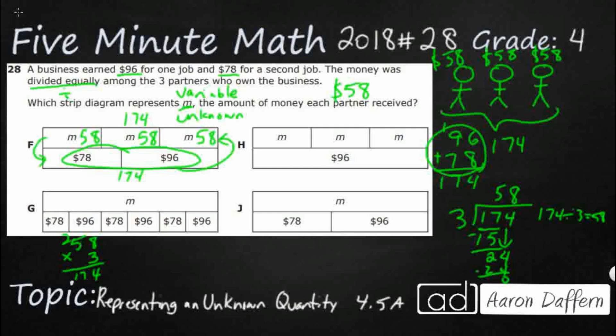And then the three parts on the bottom. But other than that, that looks like a pretty good strip diagram. Let's see what H says. We've got $58, $58, and $58. We know that 58 times 3 makes 174, not 96. So they just took one of these. We need the other one. You've got to add 96 and 78. That doesn't work. Let's check G.